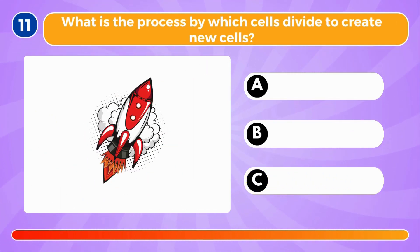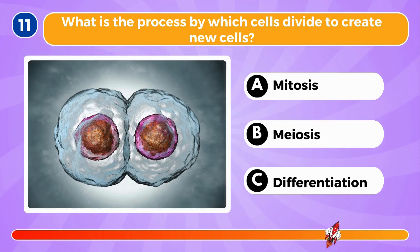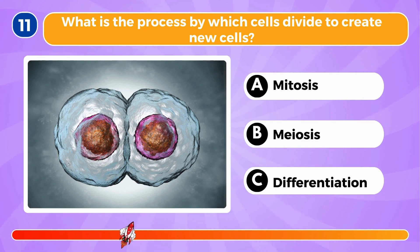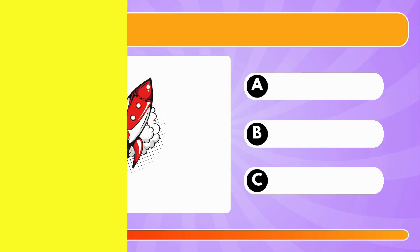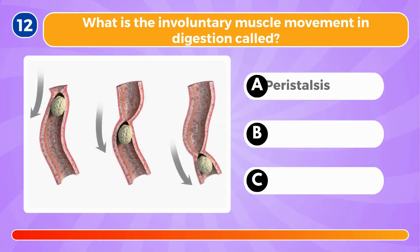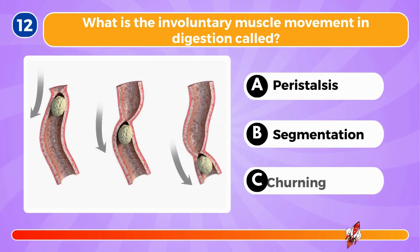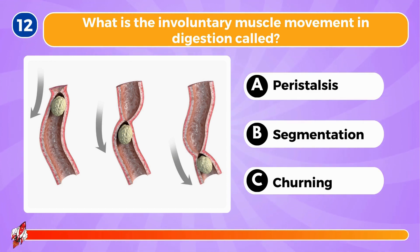What is the process by which cells divide to create new cells? It's called mitosis. What is the involuntary muscle movement in digestion called? It's called peristalsis.